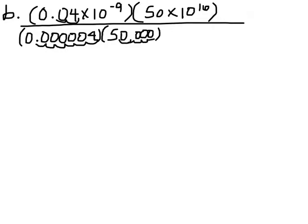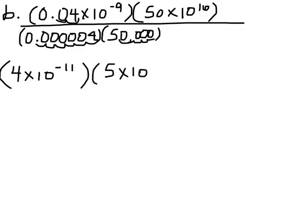I apologize for already having some work done here — I thought I had hit record and apparently I did not. So let's get started on this one. You can see that I've moved the decimal in this top number so that I have 4 times 10 to the negative 11, because I had to move it two places to the right. And here I have 5 times 10 to the 17th, because I moved it one place to the left.